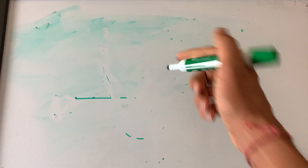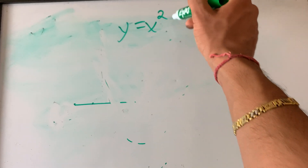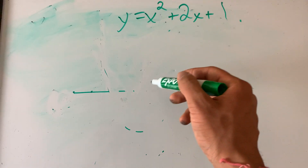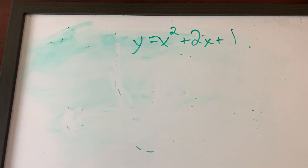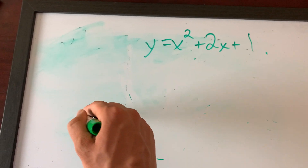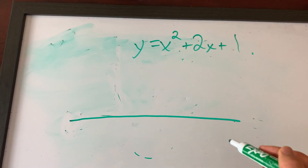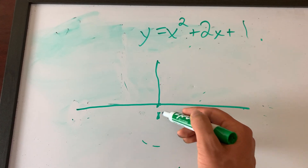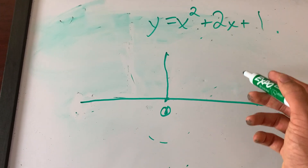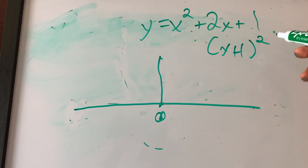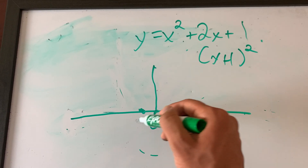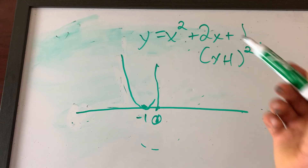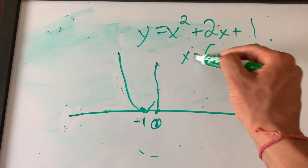If you need to graph something like y equals x squared plus 2x plus 1, and you need to graphically see this problem, you will not make any more lines than you need to. You start off like this — this will be zero, you don't need to make that entire cross. What are the solutions? It factors as (x plus 1) squared, so negative 1 is the solution. You only graph the solution.